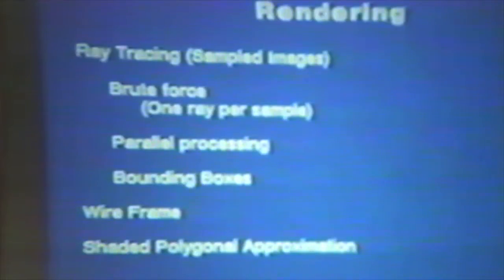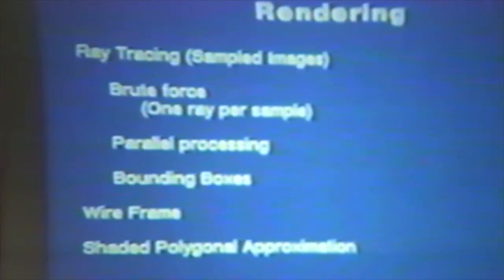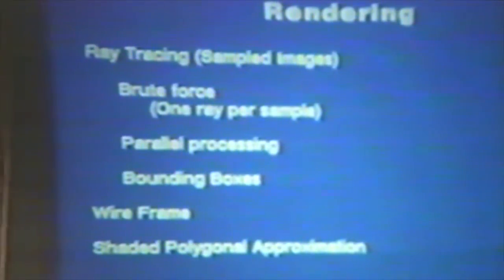Ray tracing — one of its problems — is its brute force method. It involves effectively casting a beam of light from an eye point back into the scene to see which object that beam of light might have come from, and then finding out what color that object should be at that point, given the surface normal and how many light sources there are and what color they are.